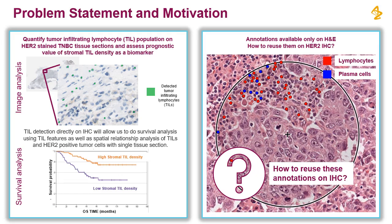This work will focus only on TILs and not on the HER2 tumor identification part. To identify TILs, a deep learning solution can be trained with cell marker annotations. You see on the right hand side some cell marker annotations on an H&E section.